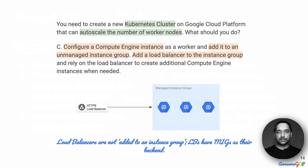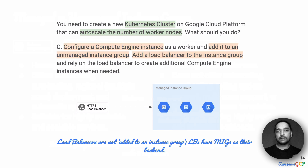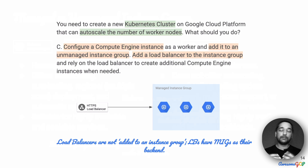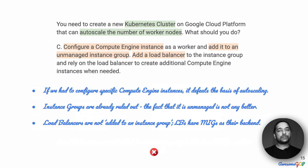The third part of Charlie's suggestion is adding a load balancer to the instance group. Although we've already eliminated this option, it's worth noting that load balancers are not added to instance groups — rather, load balancers have managed instance groups as their backend. So the suggestion of adding a load balancer to the group is itself not workable. Given all of that, we eliminate option C.